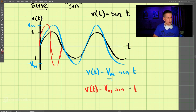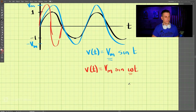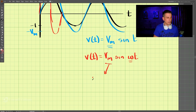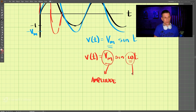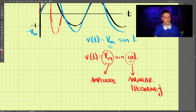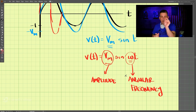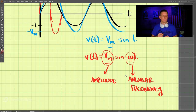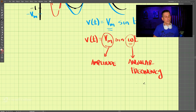We usually put the value omega in here. This term Vm is called the amplitude — it stretches the function up and down. The Greek letter omega is the angular frequency. If omega is a large number the function oscillates very fast; if omega is small, you get a very slow oscillation.